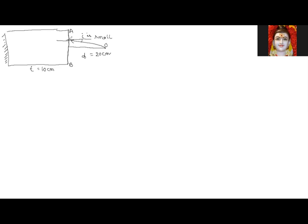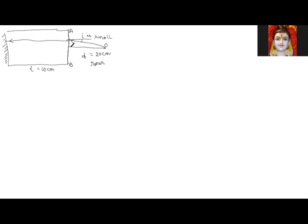The rays bend towards the normal. For this surface, the object is in the rarer medium — like a bird at a certain height. The bird will appear at an apparent height of h′ = μ × h. That is the concept we discussed previously.